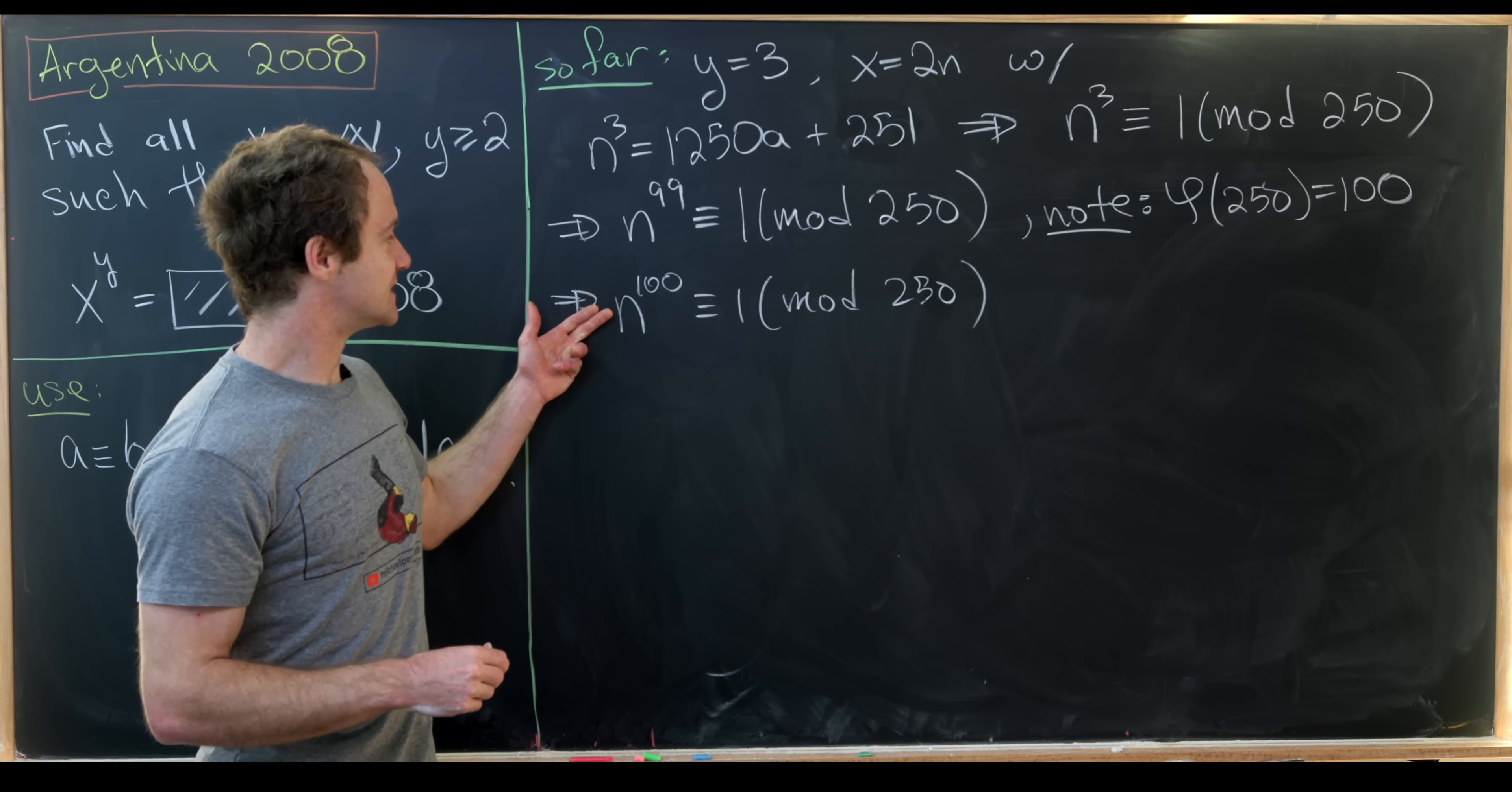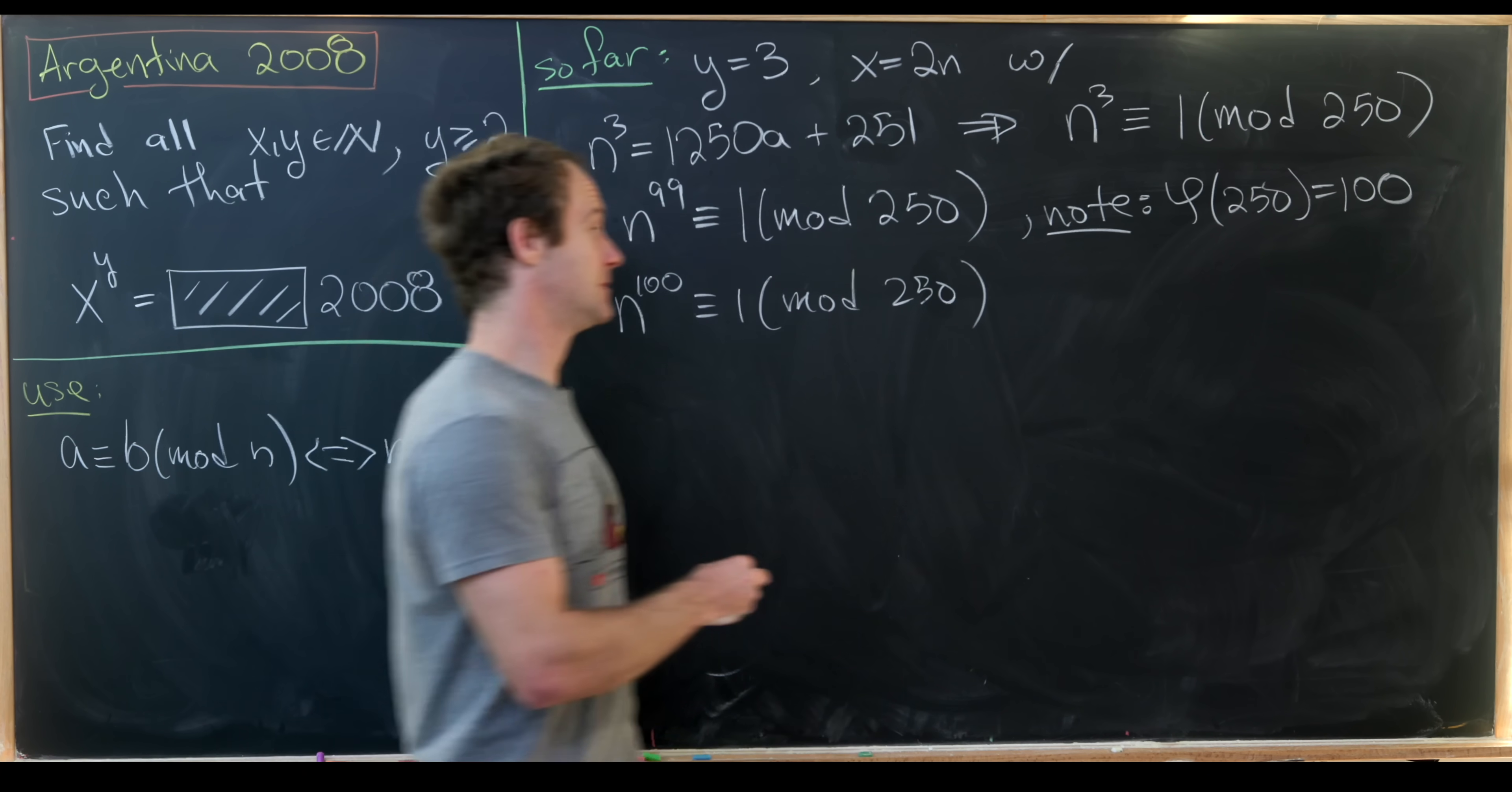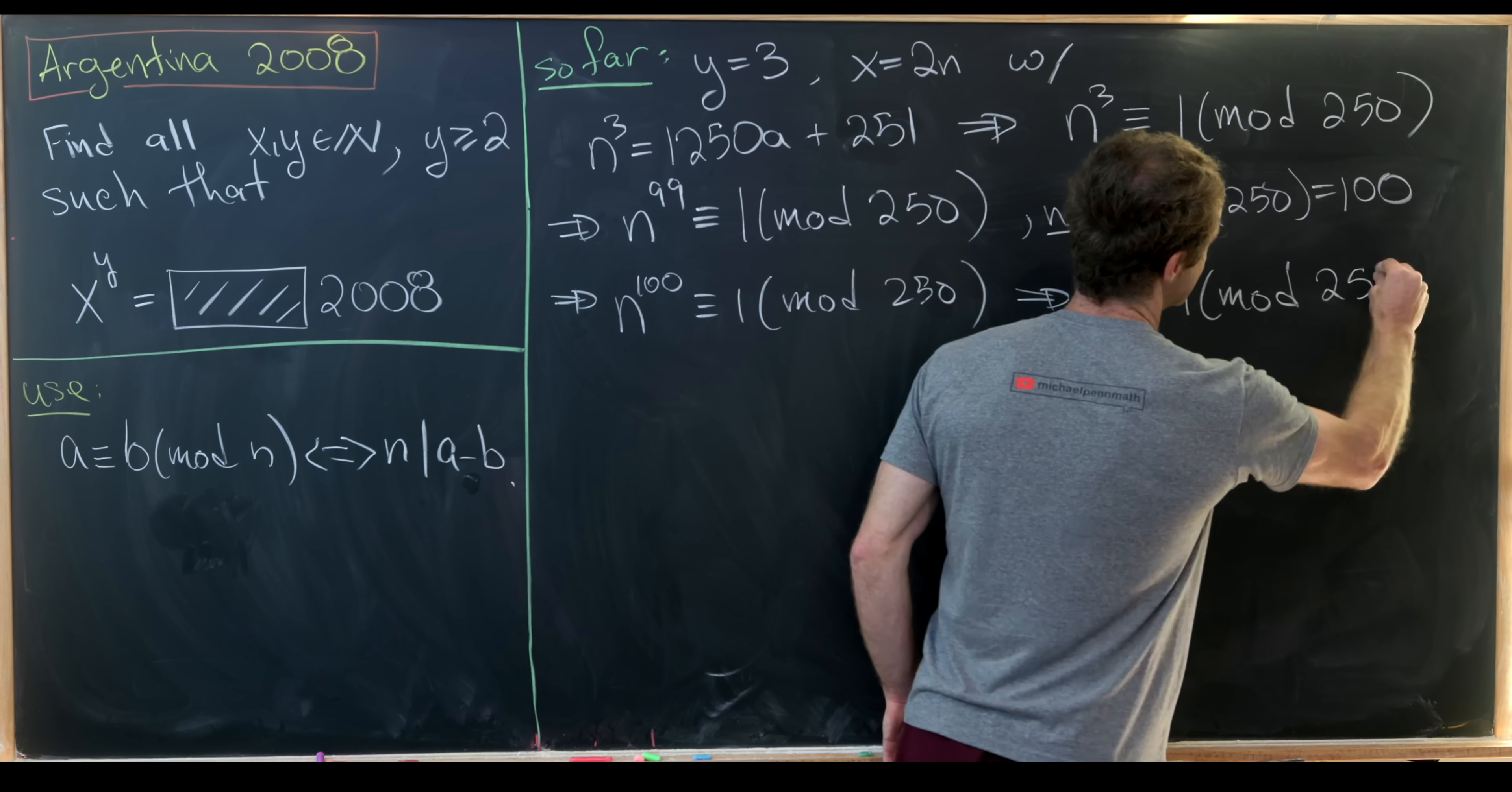So now what we'll do is take these three congruences and divide them and that will immediately tell us that n itself is congruent to 1 mod 250.